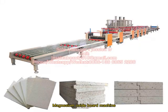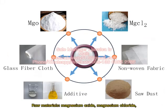Magnesium Oxide Board Machine. Raw materials include Magnesium Oxide, Magnesium Chloride, Glass Fiber, Cross Non-Woven Fabric, Additives, and Sawdust.